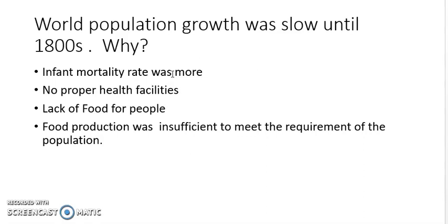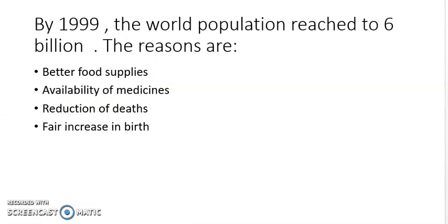Food production was insufficient to meet the requirements of the population. Population was more but food production was less — food production was not achieving the same equal target compared to population. This was another important reason for the slow growth of population during the 1800s.